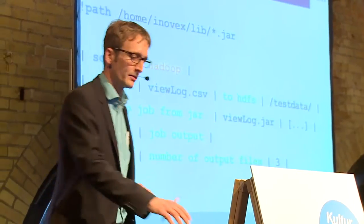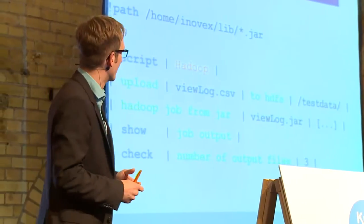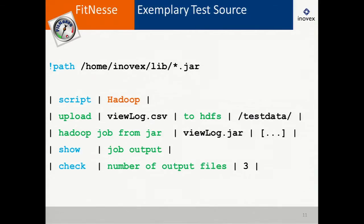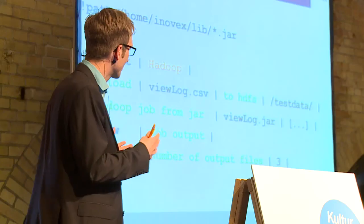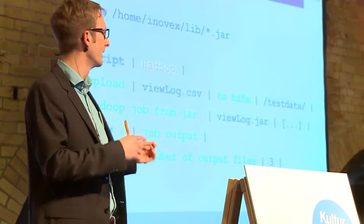The source code of this test starts with a path command telling FitNesse where to find the fixture classes that connect your test code to your system under test. Then the rest of the syntax is simple wiki-style table syntax: start the Hadoop script, upload a file to HDFS, start the job from a JAR file, show output on the website, and check the number of output files. You don't need to be a real coder or data analyst. You can even copy and paste from Excel — there's a helper to convert Excel to this format.